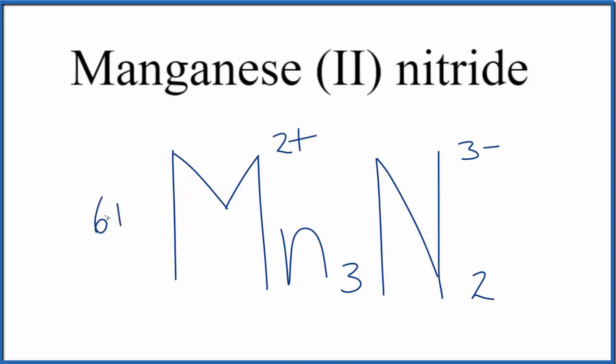3 times 2 plus, that's 6 plus. 2 times 3 minus, that's 6 minus. 6 minus 6 plus adds up to zero, gives us a net charge of zero.